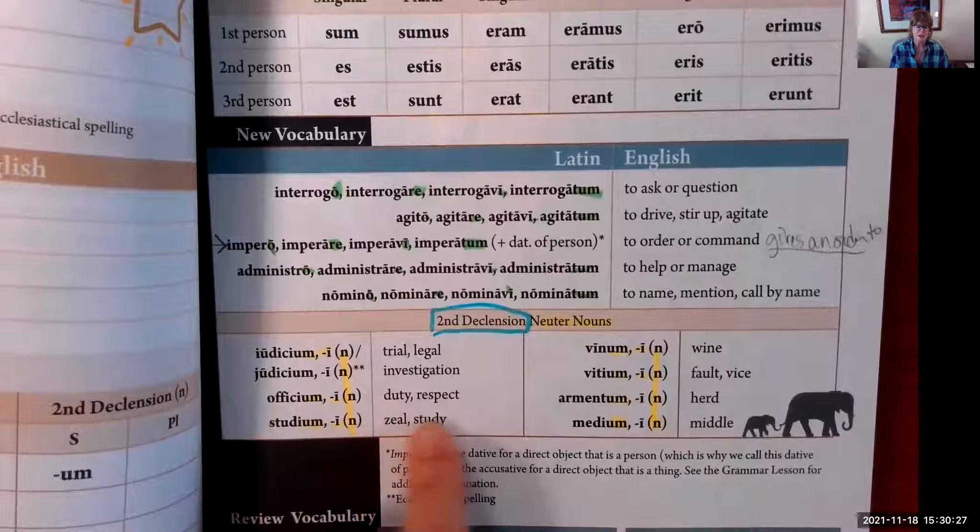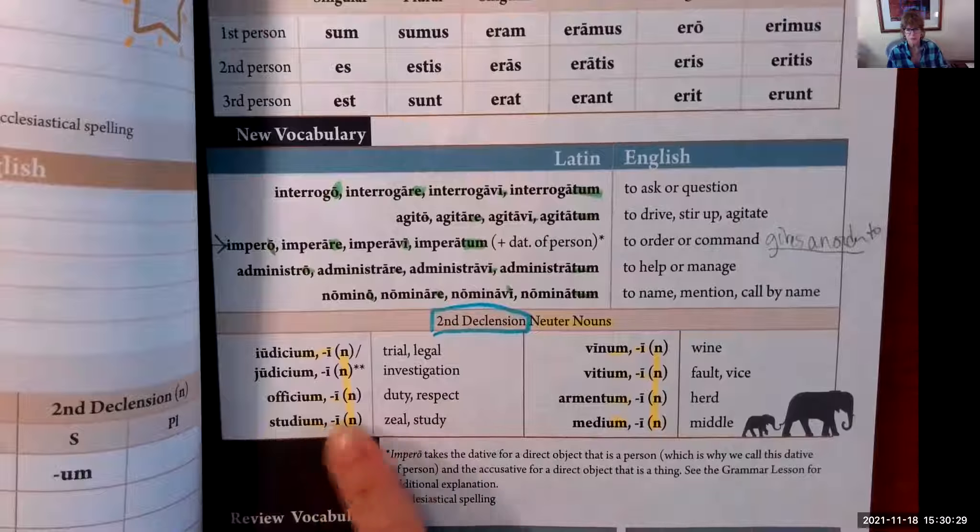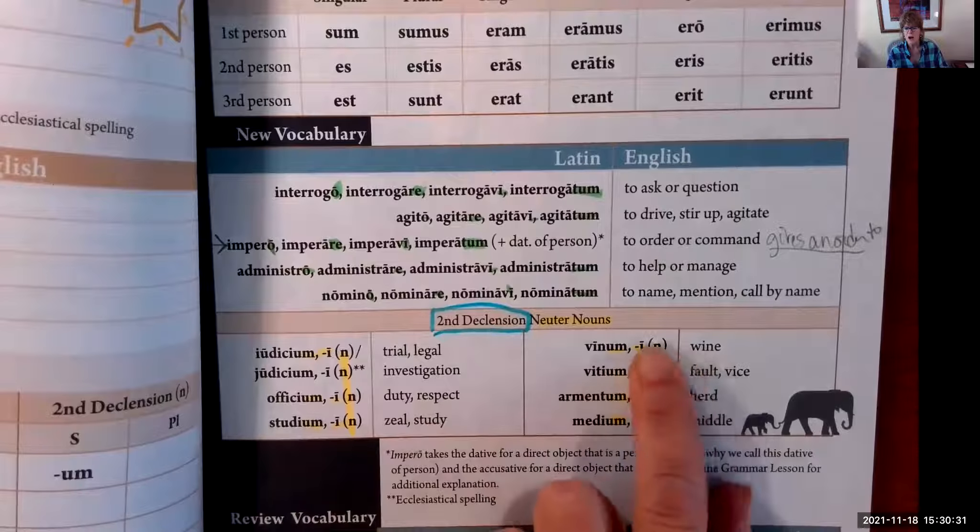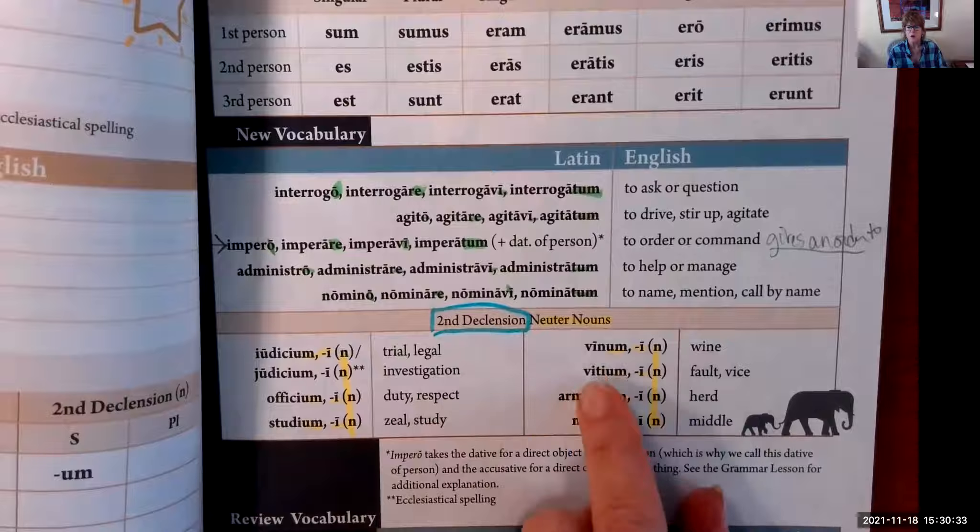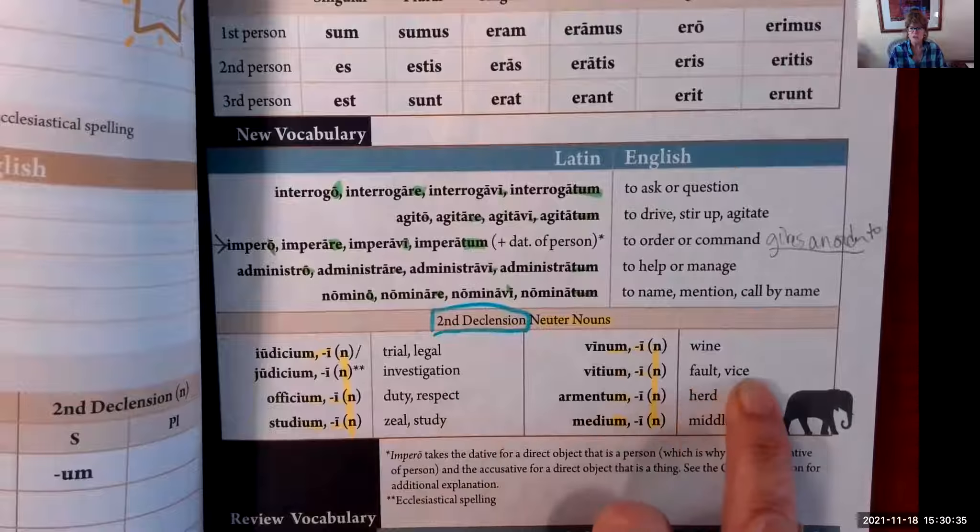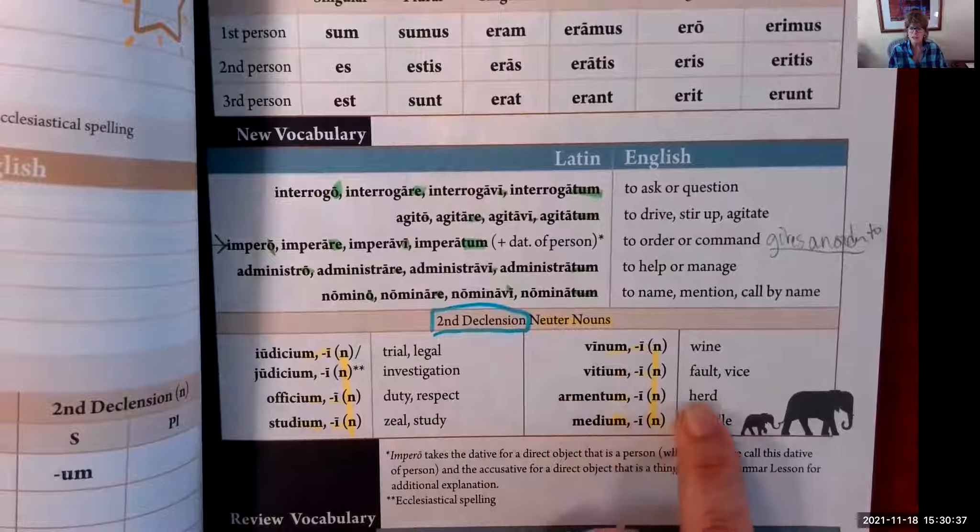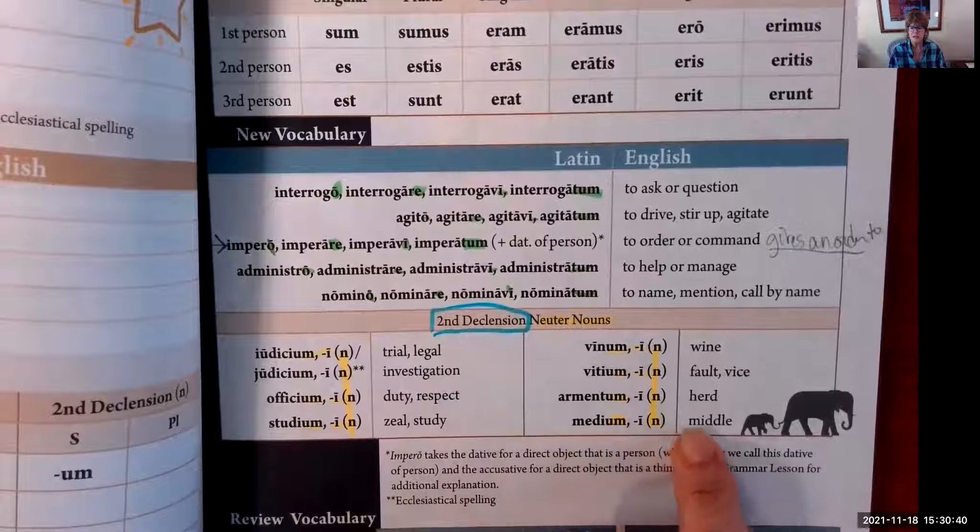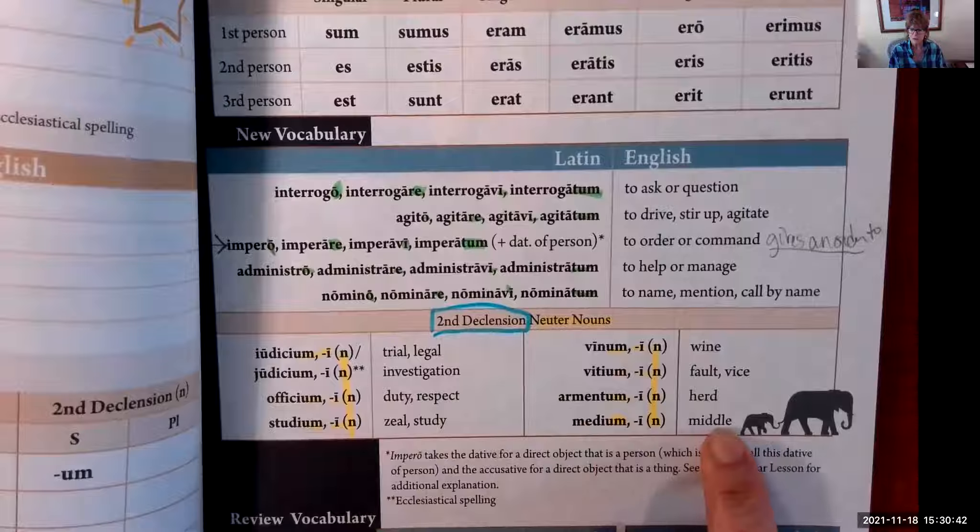So you respect the office of the president. Studium, studii—zeal, study. That's a neuter. Vinum, vini—wine, neuter. Vitium, vitii—fault or vice. Armentum, armenti—herd. Medium, medii—middle.